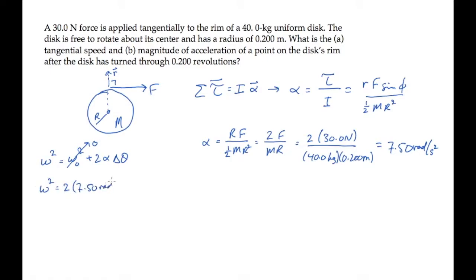And substitute the known values, converting 0.2 revolutions into radians, which shows that omega squared is 18.8 radians squared per second squared. And take the square root to find the final angular speed omega. That's how fast it's rotating.